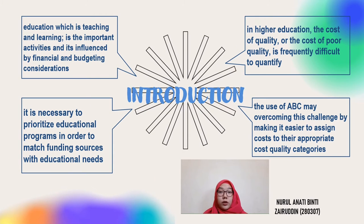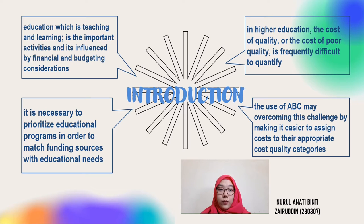Although teaching and learning are the most important activities of colleges and universities, they are largely affected by financial and budgetary considerations. To support these activities, the expected source of income must be consistent with planned expenditure, because there is no school or university without a good budget. To maintain funding sources aligned with educational needs, it is often necessary to prioritize educational programs. If income is insufficient, some programs or plans may be downgraded or cancelled entirely.